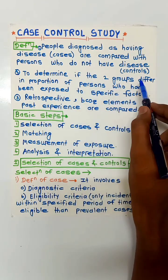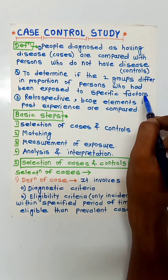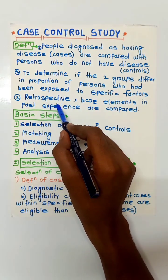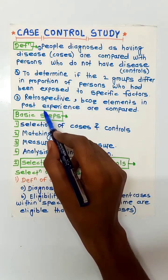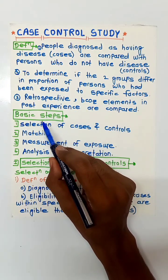It is a retrospective study because elements in the past experience are compared in this study. The basic steps involved in case control study are four steps.